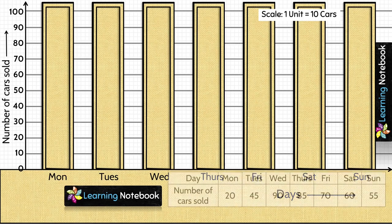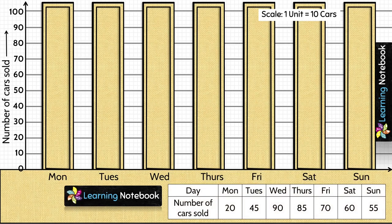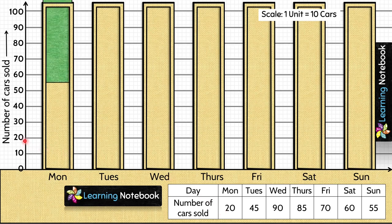Number of cars sold on Monday is 20. So let's insert a green colored bar in the window and adjust its height to represent 20 on y-axis.